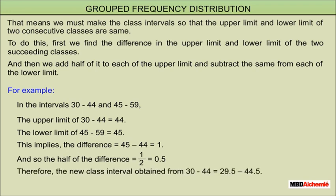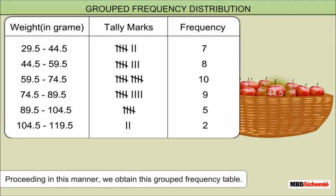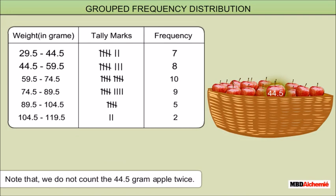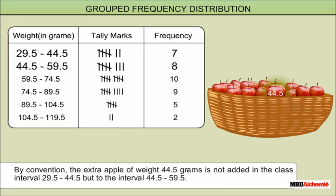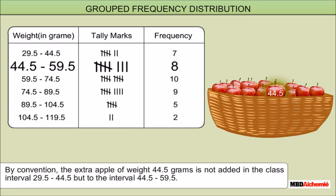Therefore, the new class interval obtained from 30 to 44 is 29.5 to 44.5, and from 45 to 59 is 44.5 to 59.5. Proceeding in this manner, we obtain the full grouped frequency table in continuous form. By convention, the extra apple of weight 44.5 grams is not counted in the class interval 29.5 to 44.5 but is added to the interval 44.5 to 59.5.